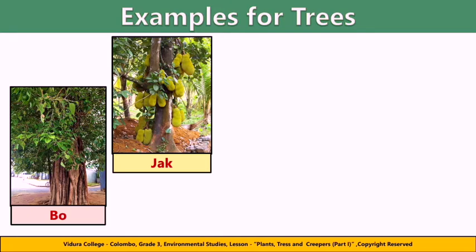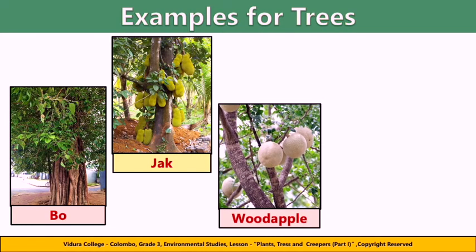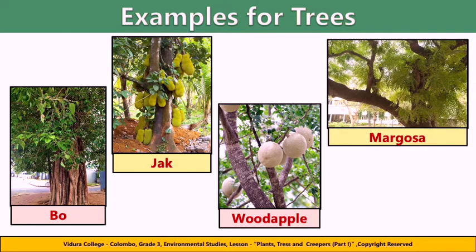The Budupara Tree is a large tree with oval-shaped leaves and a hard-berry fruit. The Magosa Tree, also known as the Neem Tree, is valued as a medicinal plant and also for its timber.